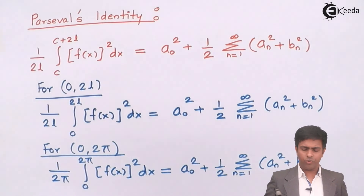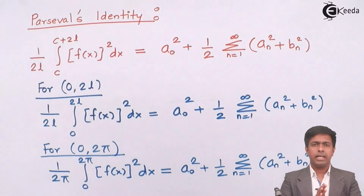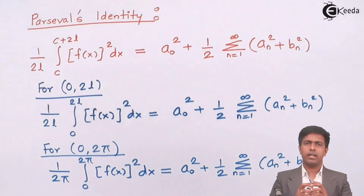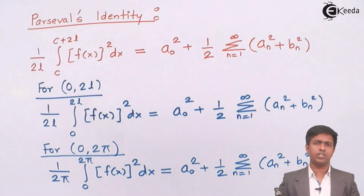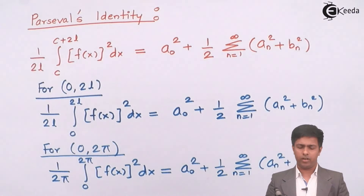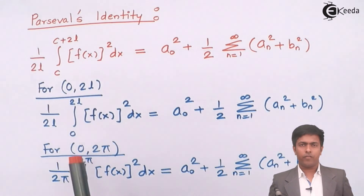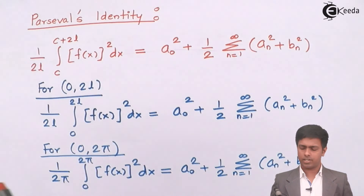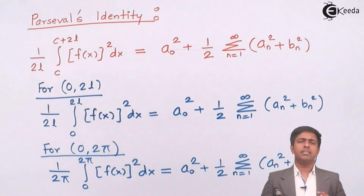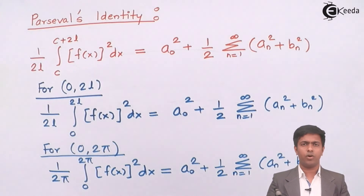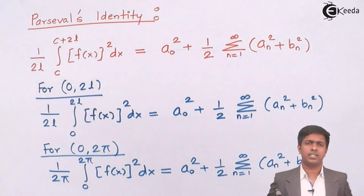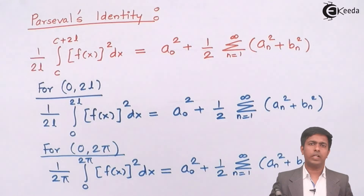We use Parseval's identity when the deduction in the question involves terms squared, raised to the 4th power, or raised to the 6th power, where the original function is a simple number. For example, if you want 1/2 squared in the series, Parseval's identity helps because it squares both sides — giving the square of the function and the squares of a₀, aₙ, and bₙ. In the coming examples we will use Parseval's identity to solve numericals and prove results.